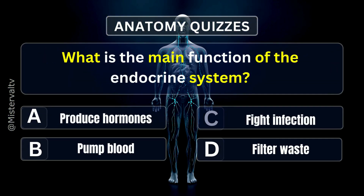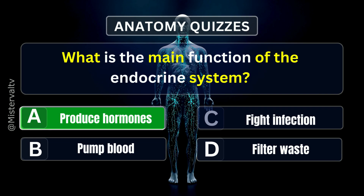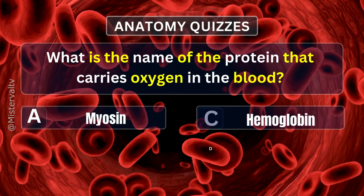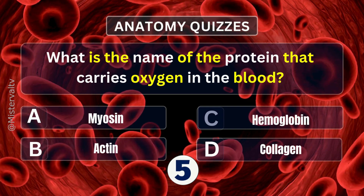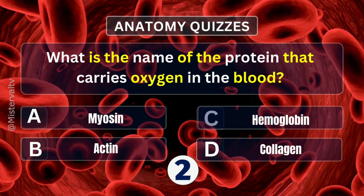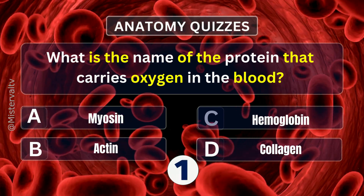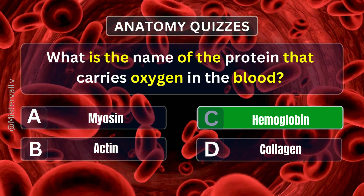What is the main function of the endocrine system? Answer. A. Produce hormones. What is the name of the protein that carries oxygen in the blood? Answer. C. Hemoglobin.